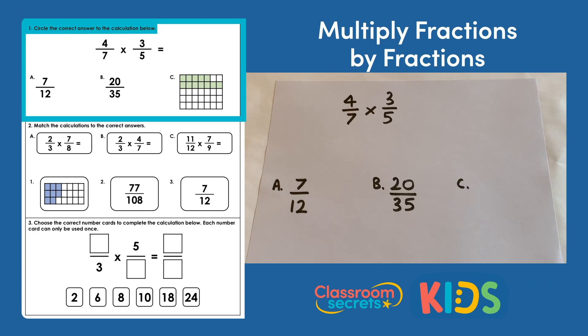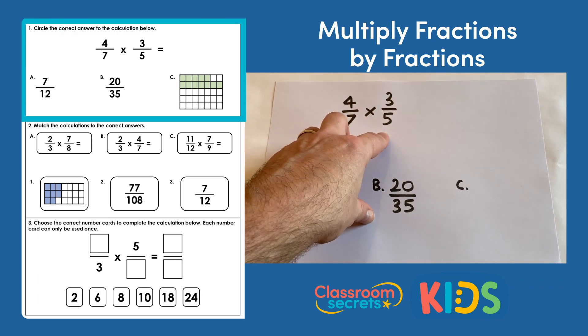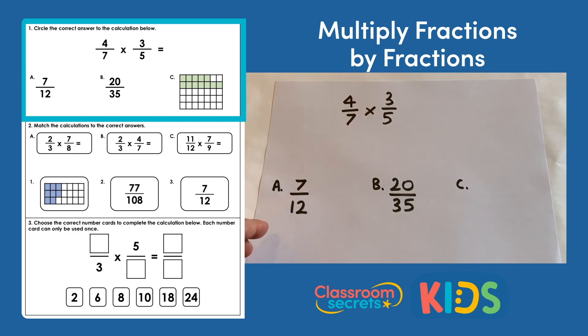Question one says circle the correct answer to the calculation below. We have 4/7 multiplied by 3/5 and we've got three possible answers.